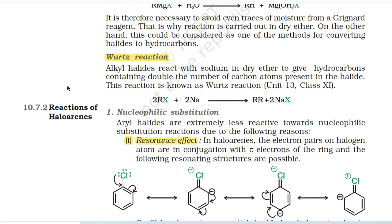Wurtz reaction: Alkyl halides react with sodium in dry ether to give hydrocarbons containing double the number of carbon atoms present in the halide. 2RX + 2Na → R-R + 2NaX.